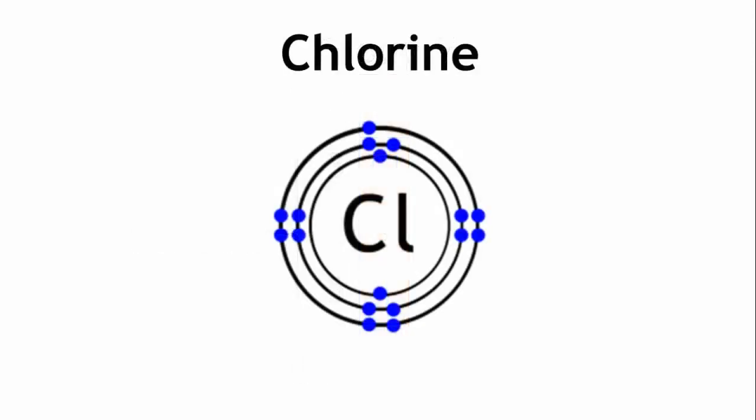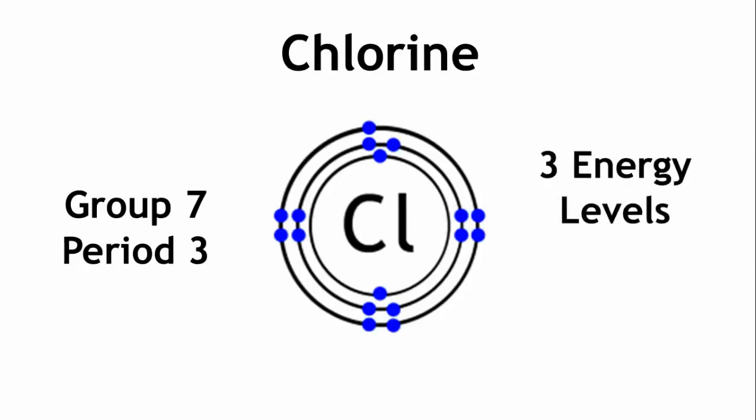So chlorine is in group 7, period 3, therefore it has 3 energy levels with 7 electrons in its outermost shell.